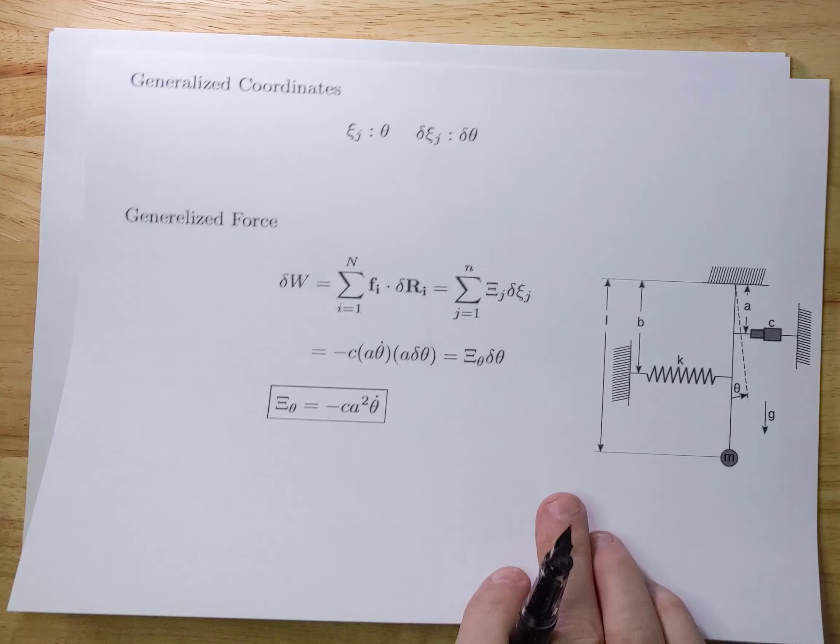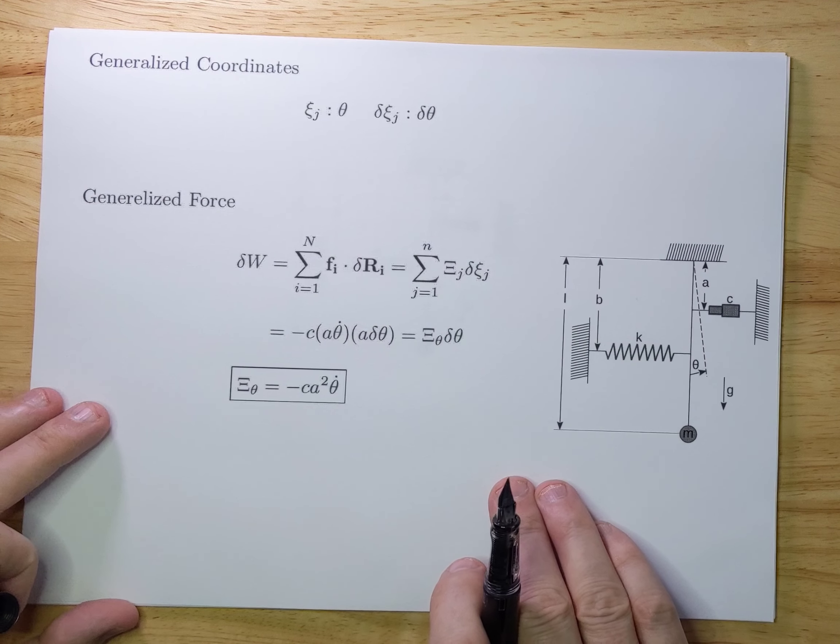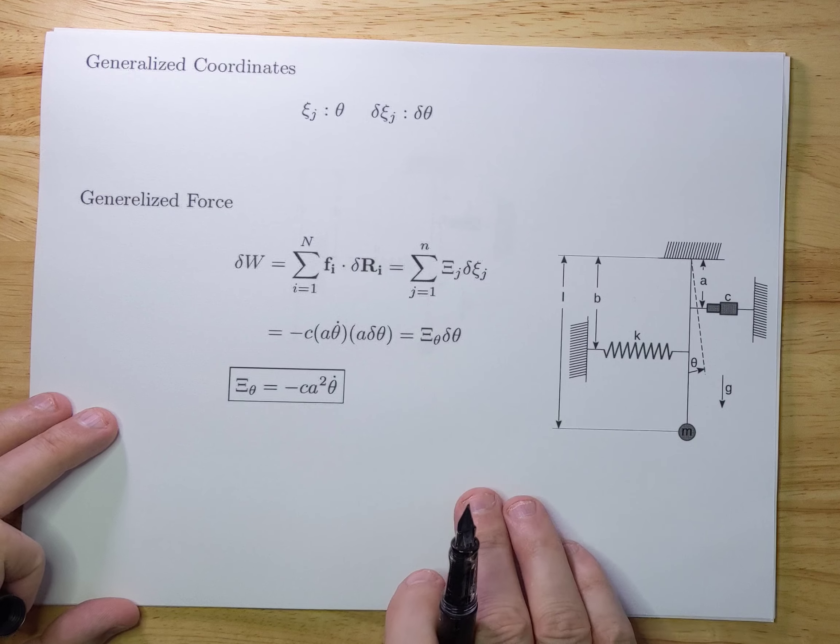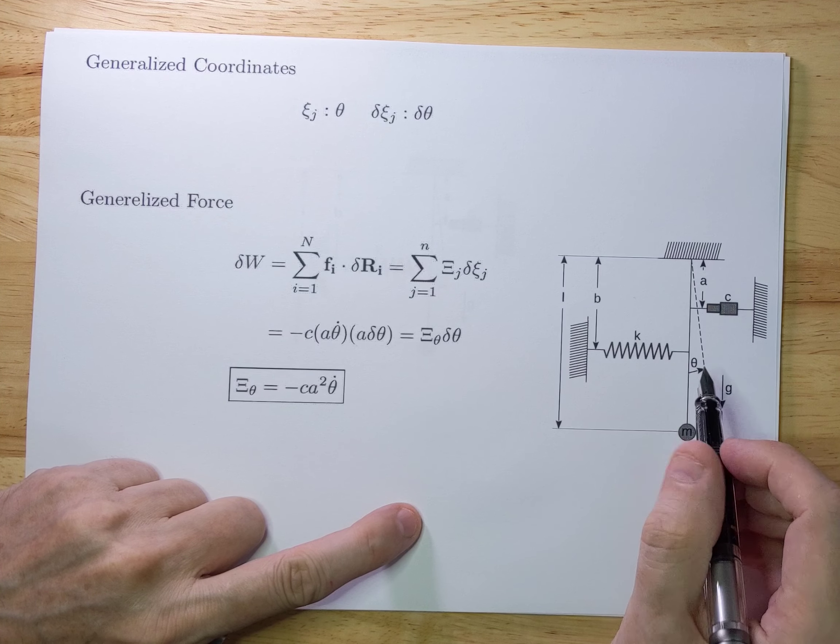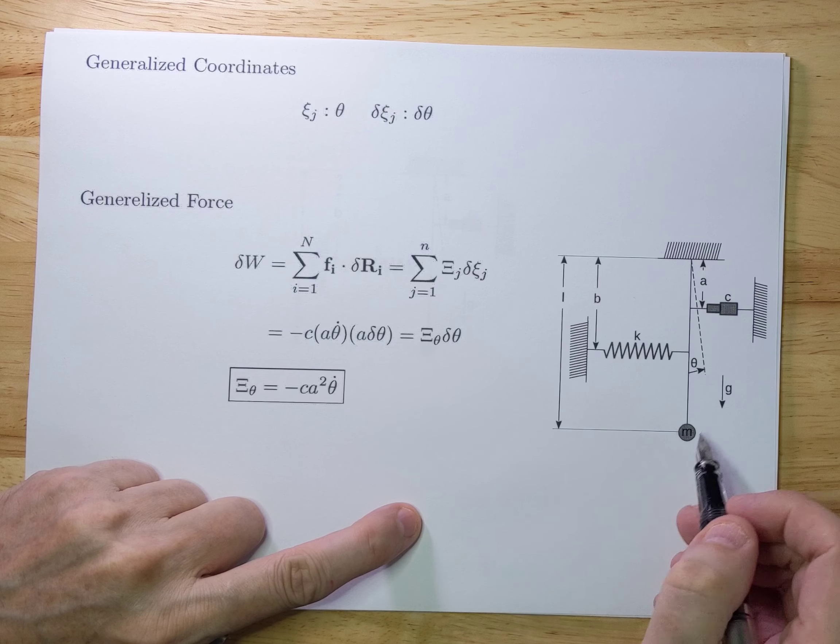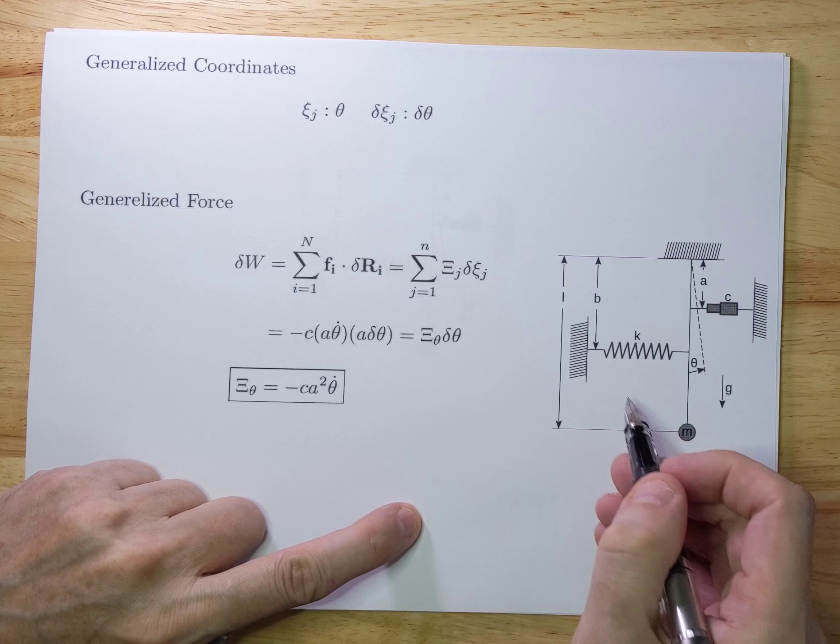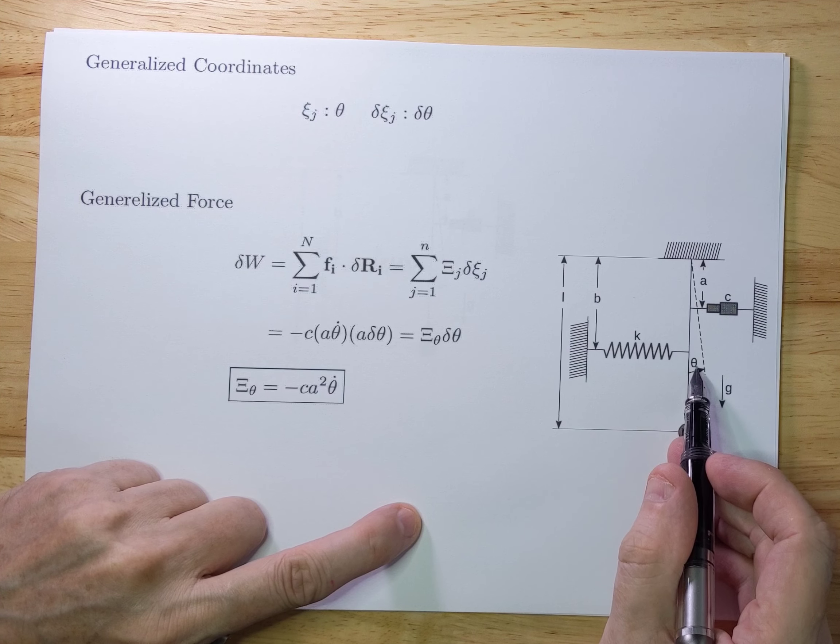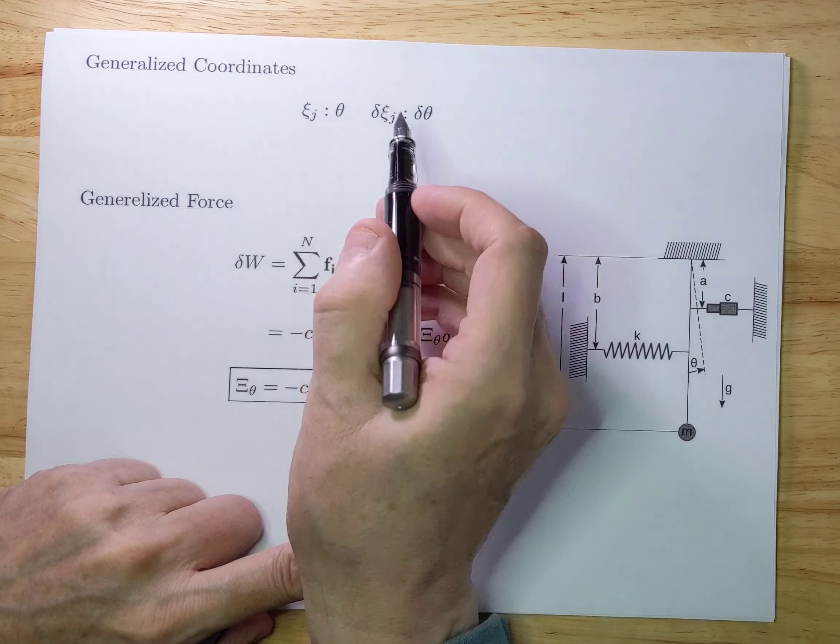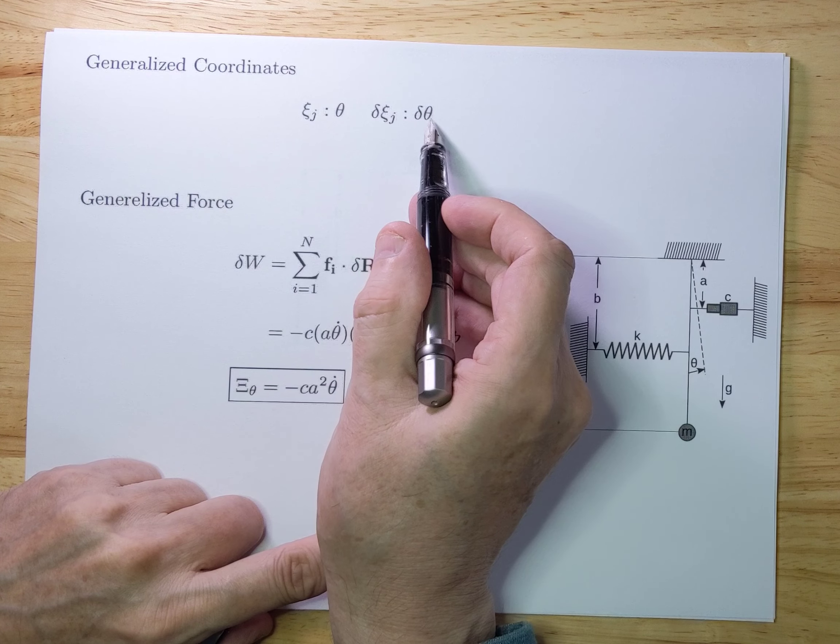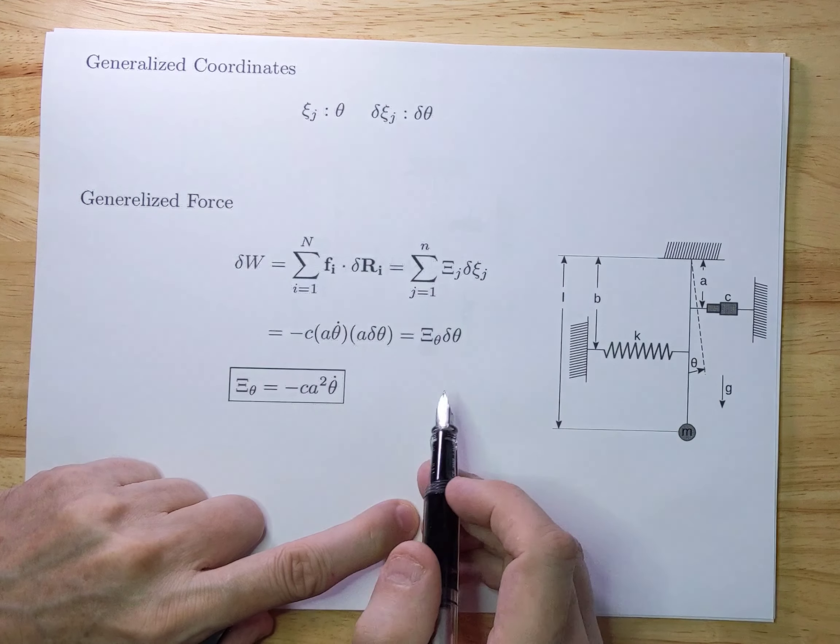So in order to solve this using Lagrangians, we're going to use generalized coordinates. And if you look carefully, there's only one coordinate that's really of any importance because it does move in a flat plane going back and forth. Only the theta here is relevant and we can use that as a generalized coordinate. The generalized movement as a consequence will be delta theta.